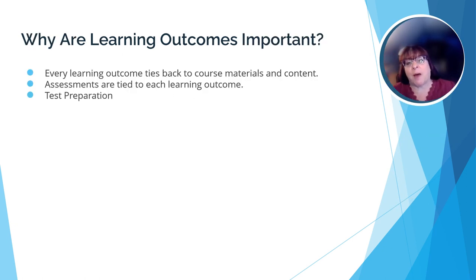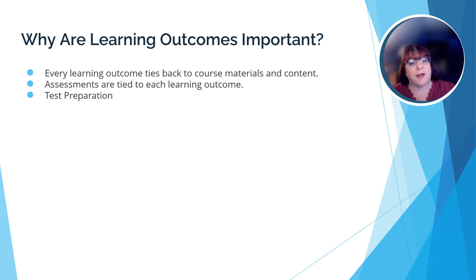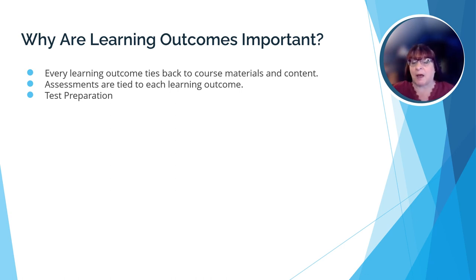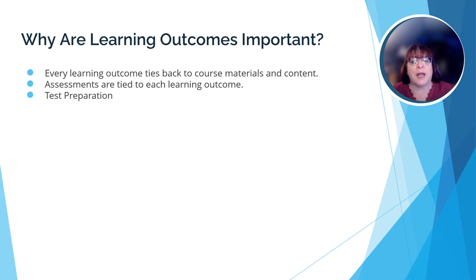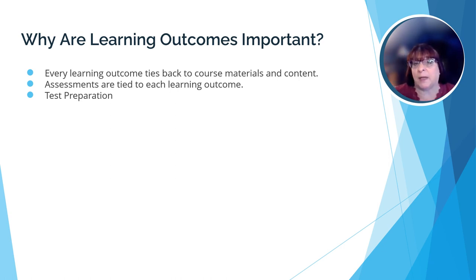A reminder about why learning outcomes are important: every resource in the course can be tied back to one of the learning outcomes, which means that all assessments, including the final exam, are directly linked to the learning outcomes. Once you get to the end of the course, review the learning outcomes and see which ones you feel confident about. If there are some you're not sure about, it's a good idea to go back to the units that cover that outcome and review the material to ensure you have all the knowledge you need to be successful on the exam.